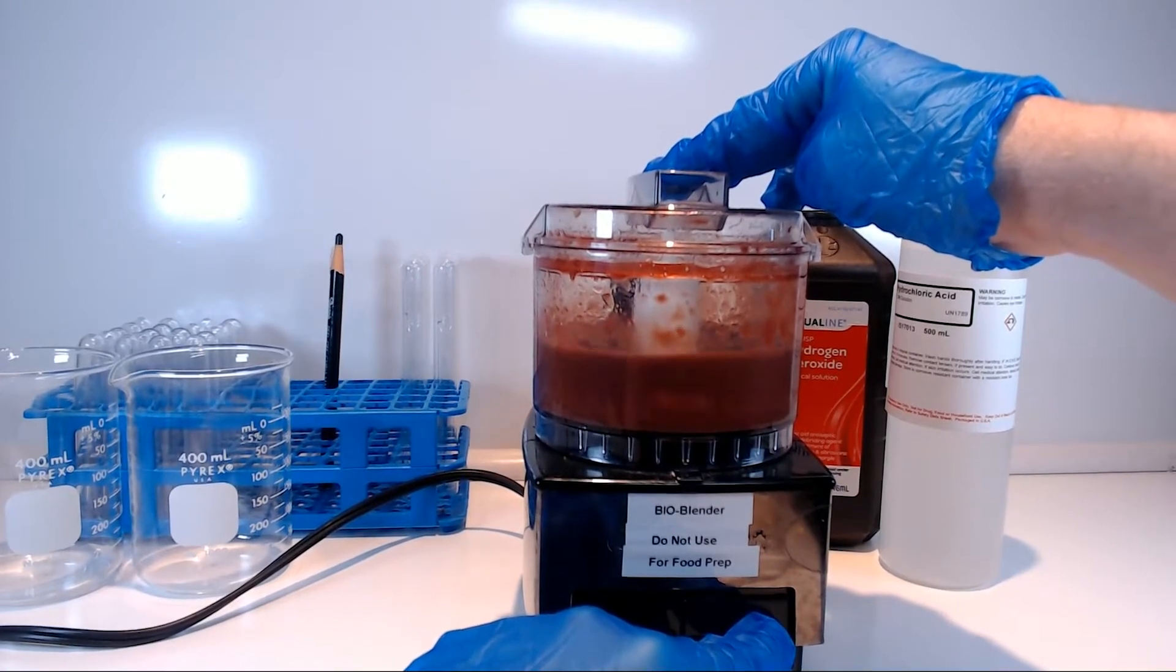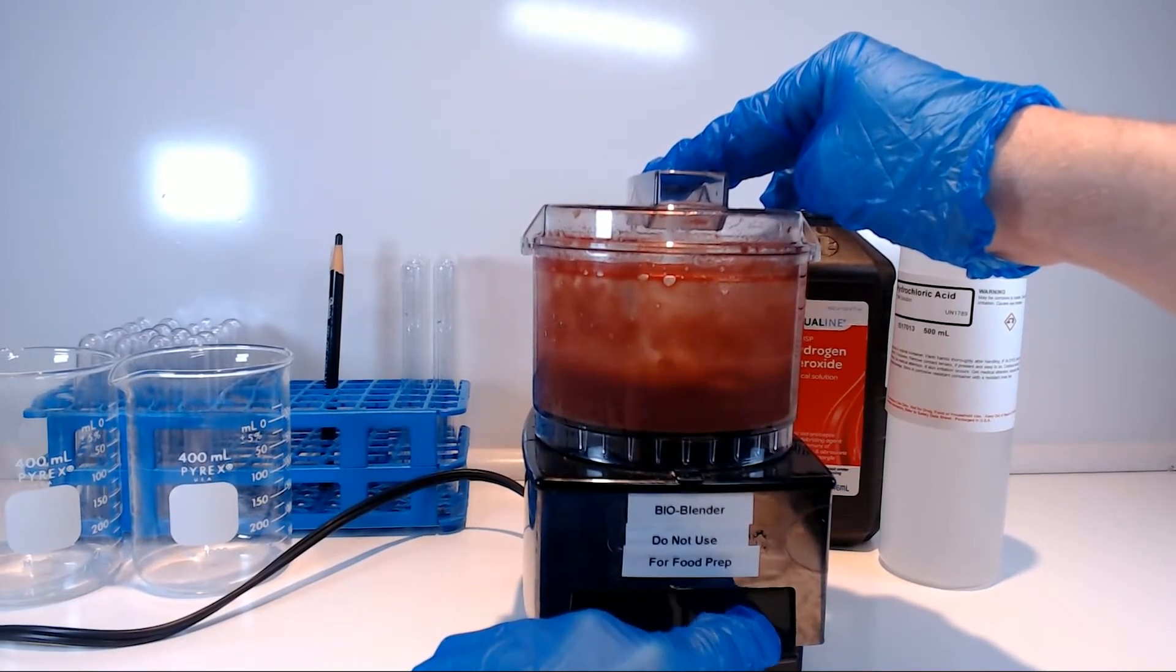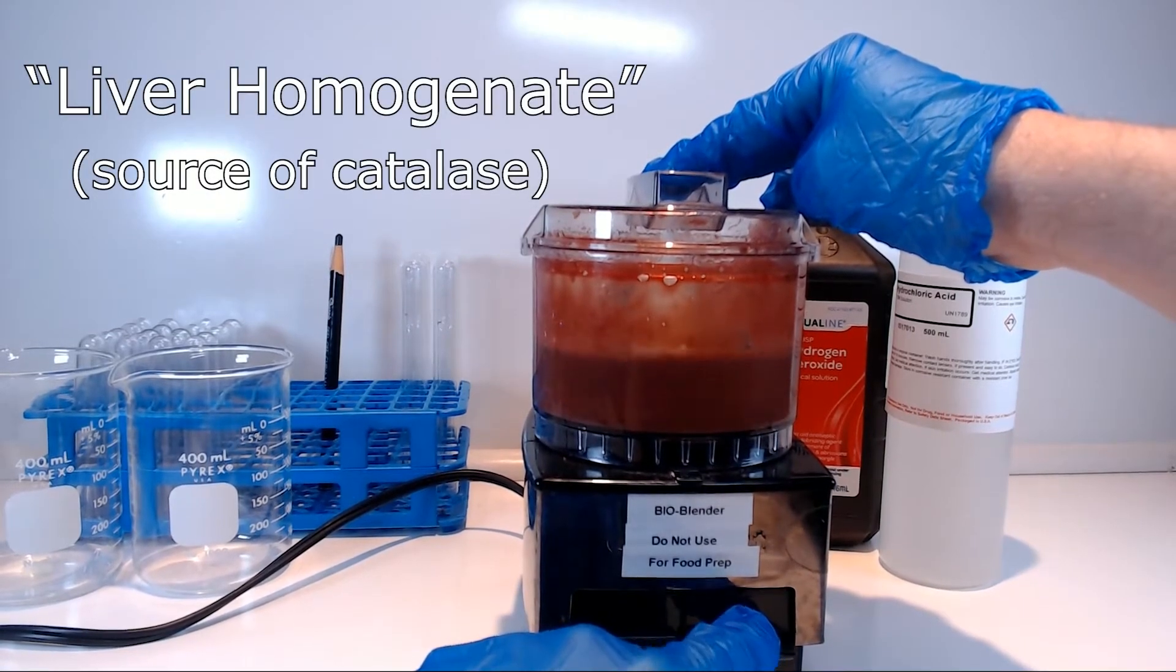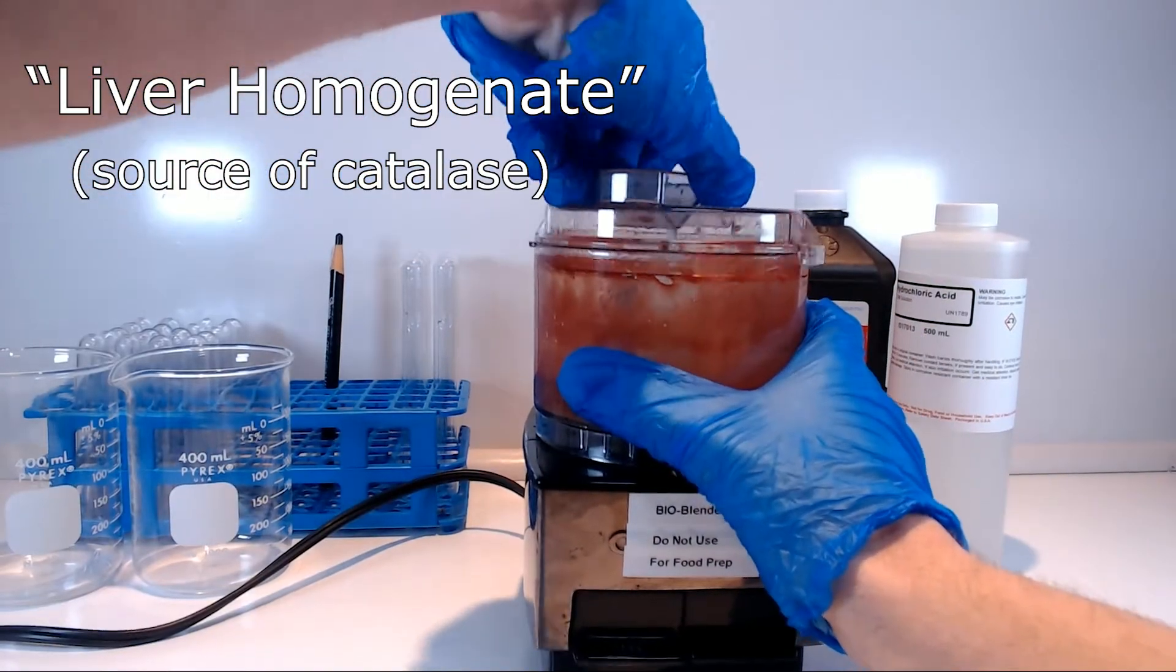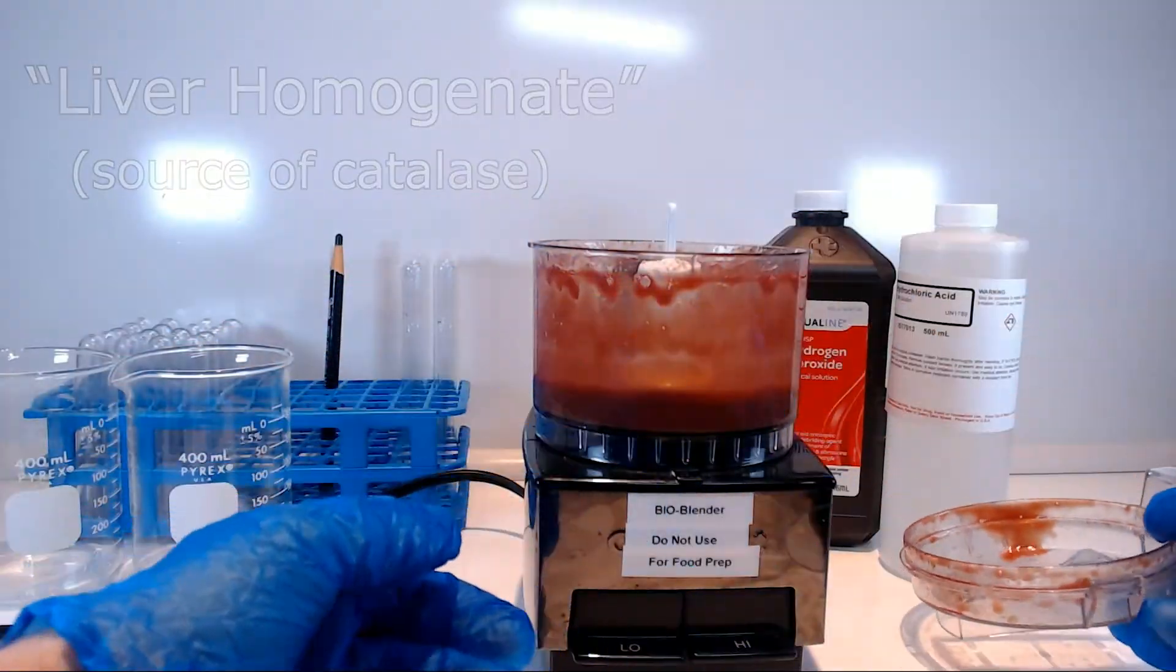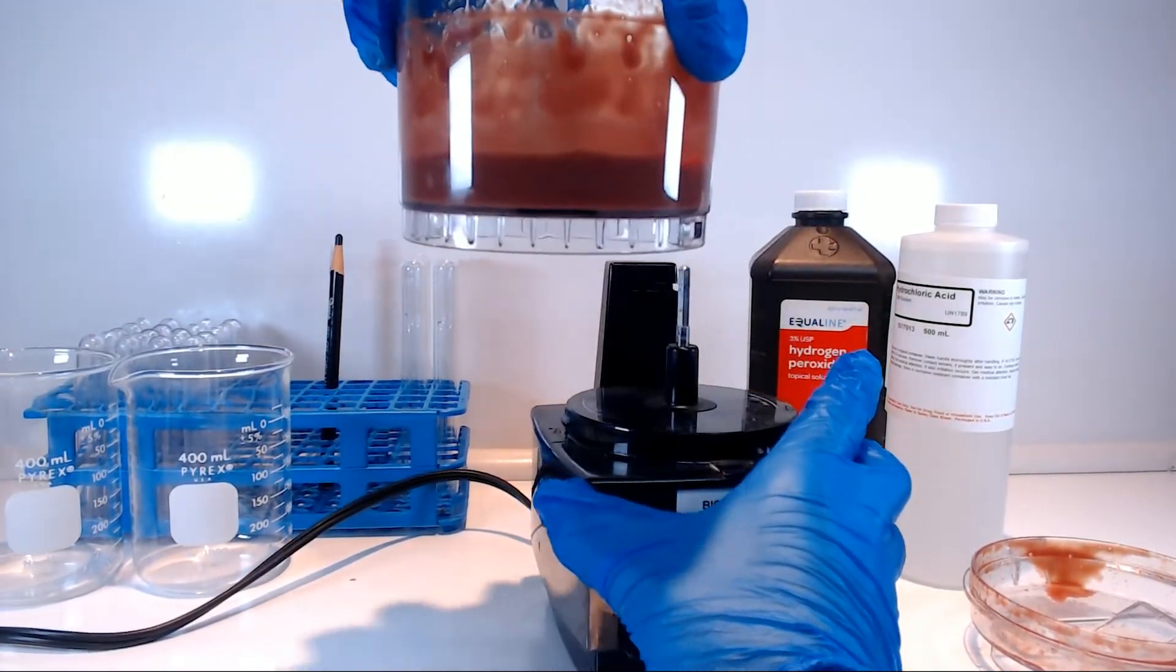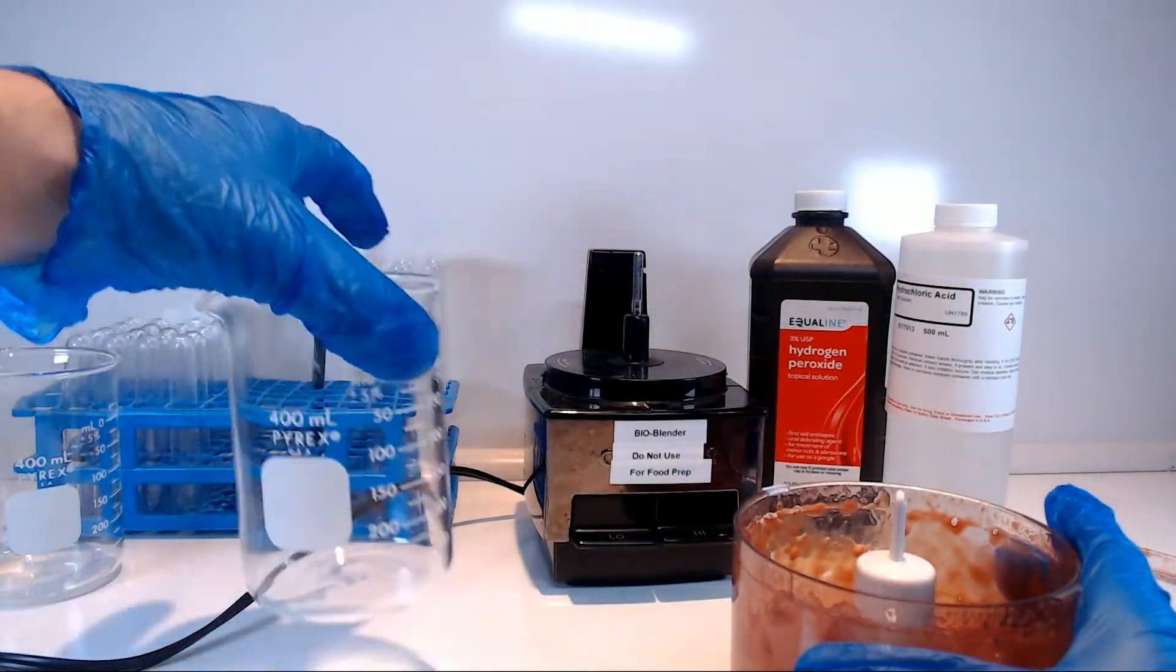Cutting up the liver into tiny pieces maximizes the amount of surface area that we have from the tissue in contact with the hydrogen peroxide in solution, and pureeing it into this liver homogenate solution is taking that idea to the furthest possible extreme. It also gives us the additional benefit of being able to deliver a precise volume of liver homogenate to each test tube, so that for each reaction we are delivering exactly the same amount of enzyme in all of the five situations we are going to be testing.